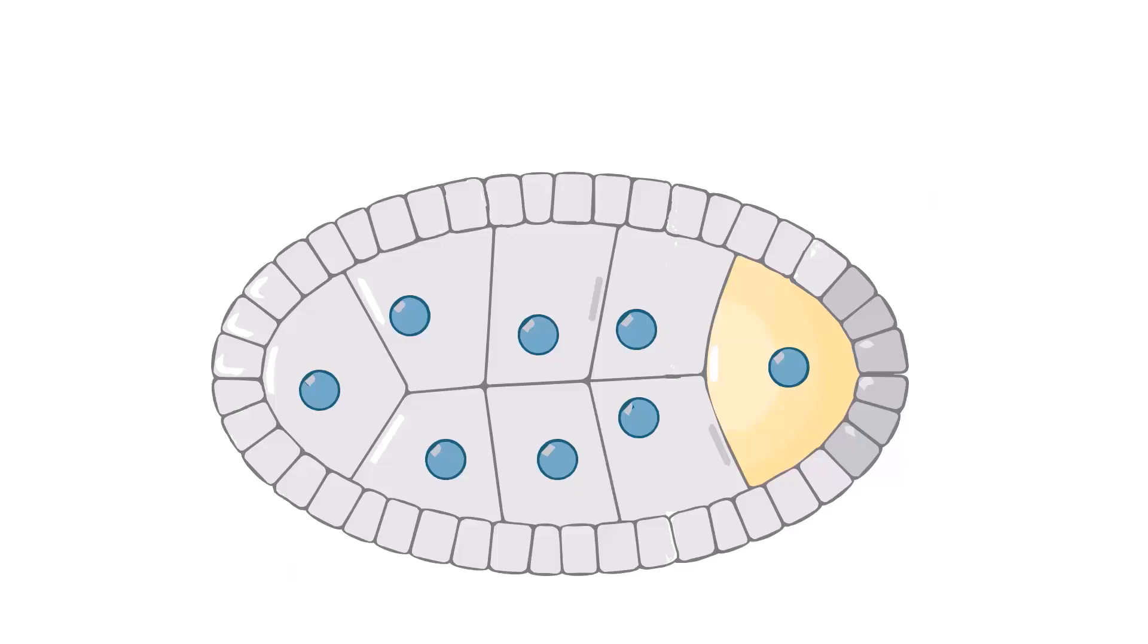The anterior-posterior axis is specified during oogenesis. The oocyte moves into the posterior region of the egg chamber, while nurse cells fill the anterior portion.